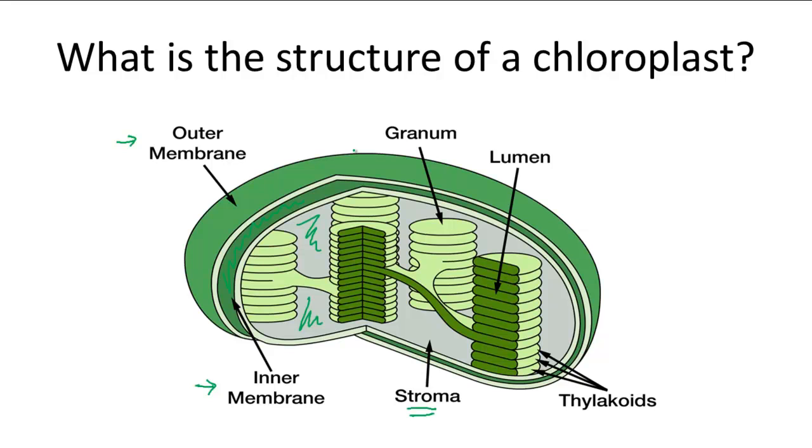Chloroplasts actually have a third type of membrane found in the stroma. These are layers of membranes in the stroma where the photosynthetic processes occur.